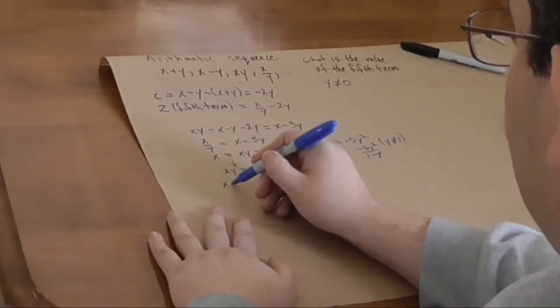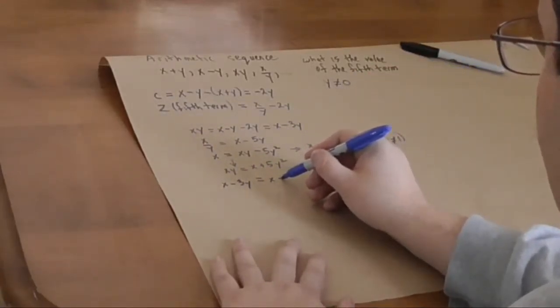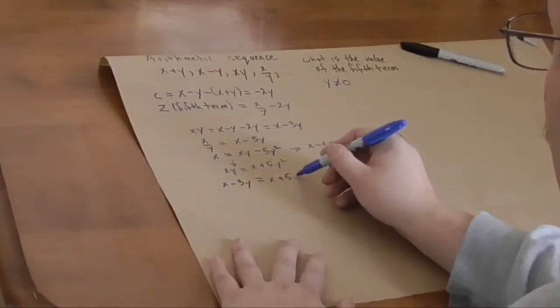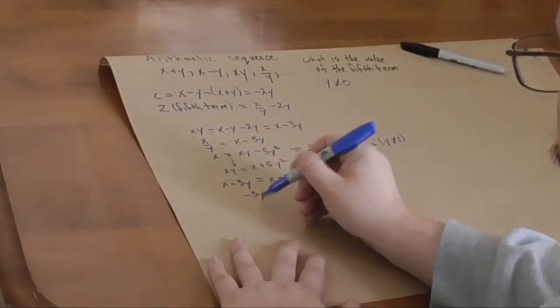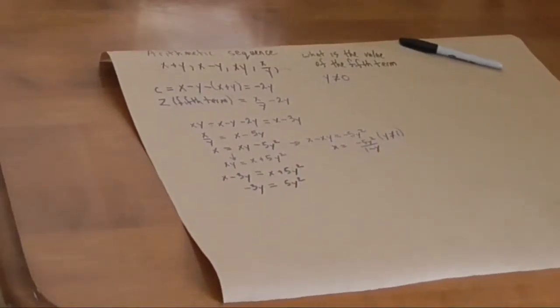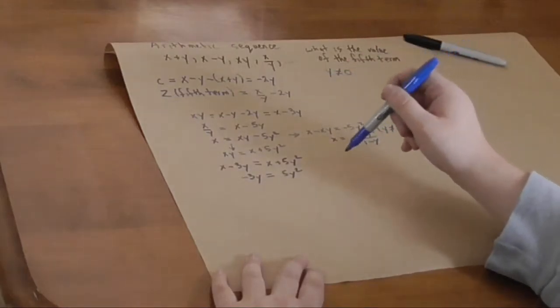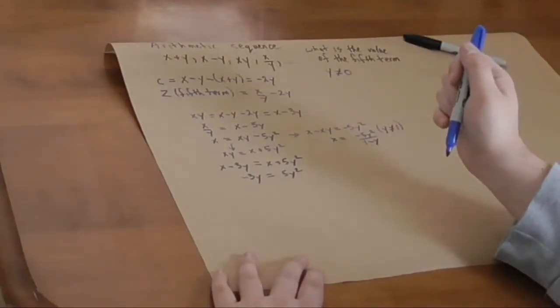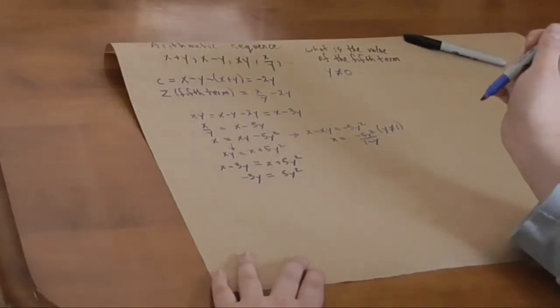Gives us x minus 3y equals x plus 5y squared. The x's cancel, so minus 3y is equal to 5y squared. Nice!